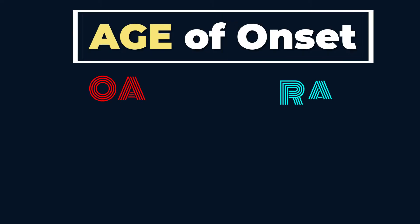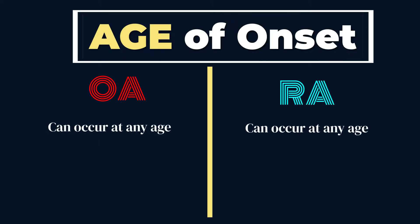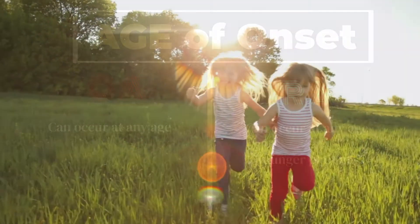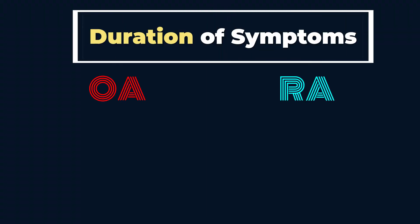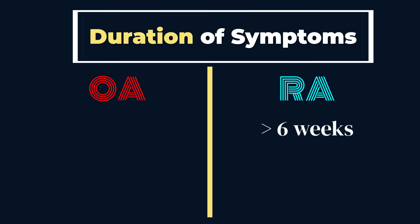Number two: age of onset. Both diseases can occur at any age and the risk increases with age, although for RA, it tends to happen in younger people compared to OA. Number three: the duration of symptoms. To diagnose RA, a symptom duration of more than 6 weeks gives a higher probability of RA, while duration of symptoms is not a diagnostic criteria doctors use to diagnose OA.